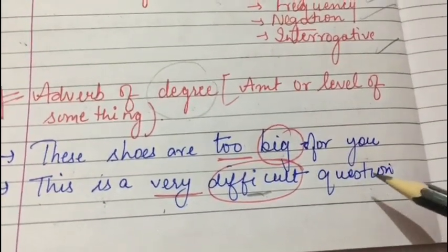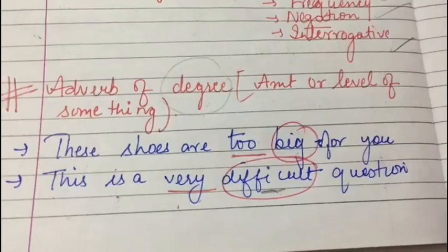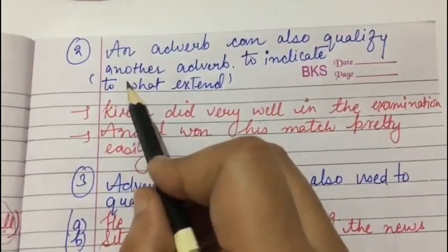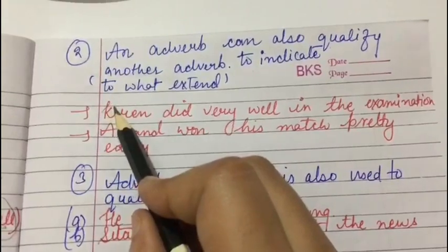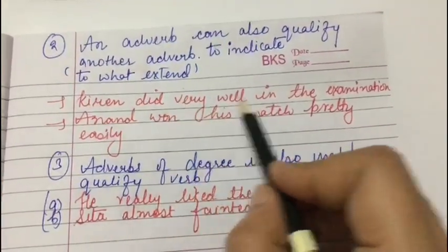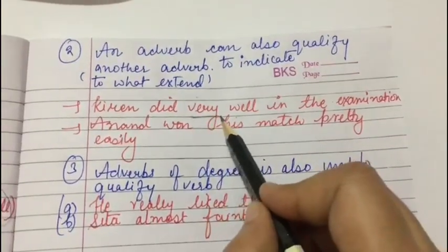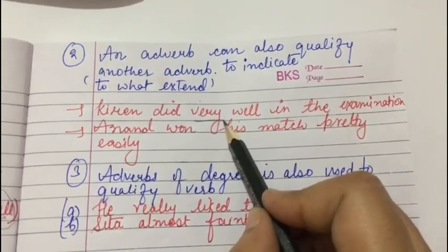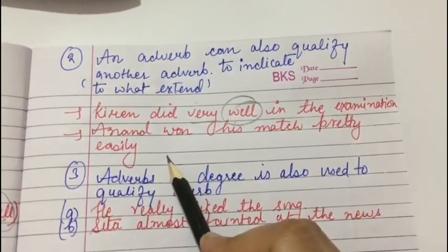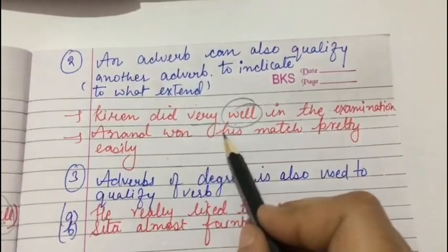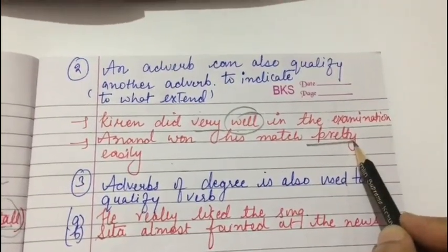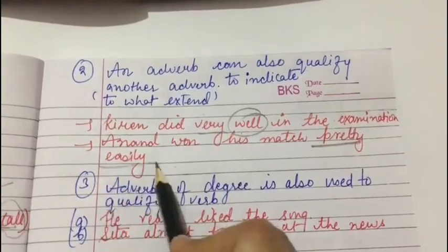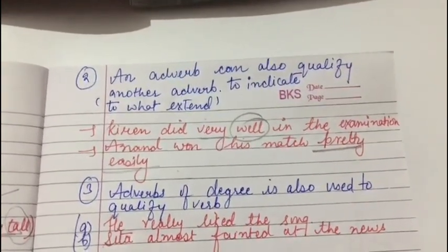In both cases, the adverb qualifies an adjective and answers the question 'to what extent' — such an adverb is known as adverb of degree. An adverb of degree can also qualify another adverb. For example, 'Kiran did very well in the examination' — here 'very' tells us how well Kiran did and qualifies the adverb 'well.' Similarly, 'Angad won his match pretty easily' — here 'pretty' qualifies the adverb 'easily.'